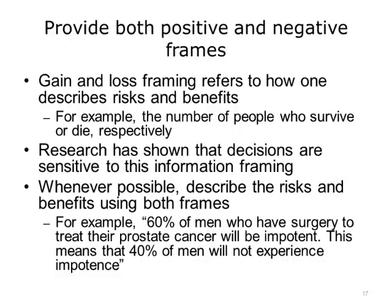An additional best practice is to provide both positive and negative frames. Gain and loss framing refers to how one describes risks and benefits, for example, the number of people who survive or die, respectively. Research has shown that decisions are sensitive to this information framing. Positive framing, or framing in terms of gains rather than losses, has been shown to be associated with lesser perception of harm and increased acceptance of harmful interventions, such as high-risk surgery. Framing effects can be offset by preparing participants with questions to help them identify factors relevant to their decision making. The addition of visual aids to natural frequency information has also shown to reduce the effect of possible framing. Whenever possible, describe the risks and benefits using both frames. For instance, 60% of men who have surgery to treat their prostate cancer will be impotent. This means that 40% of men will not experience impotence.